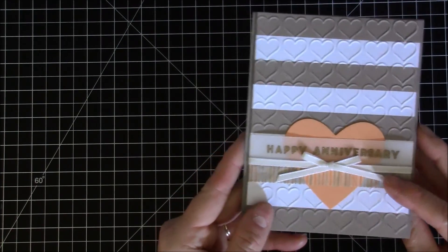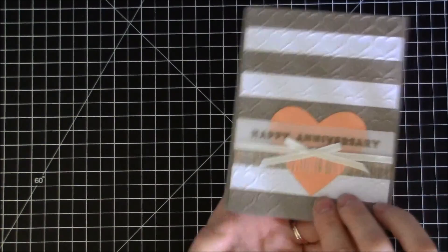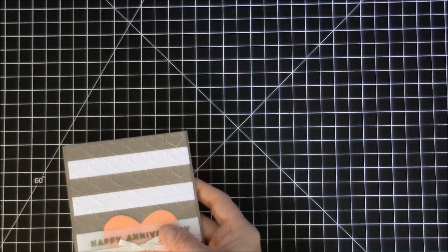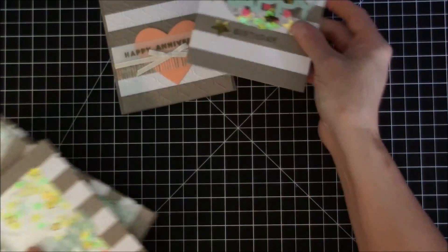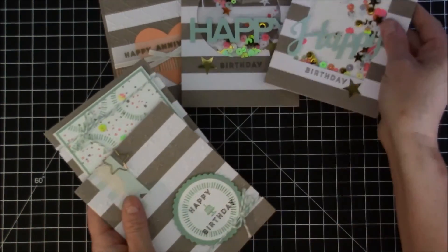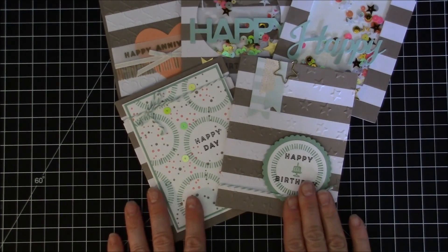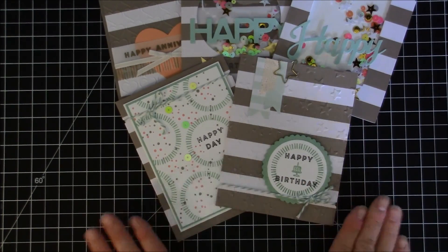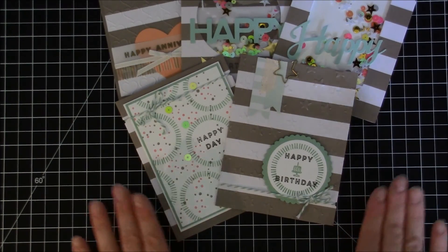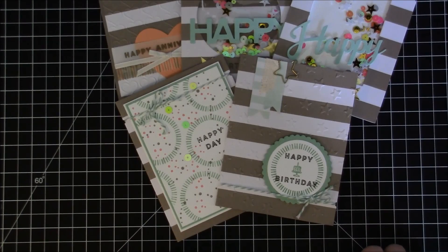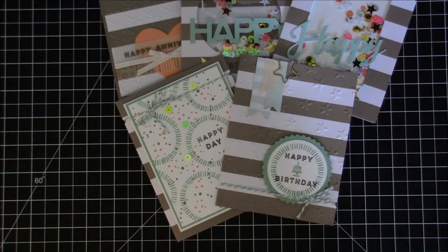So these are my five different cards that I made from the June 2016 paper pumpkin kit. Of course you don't have to do this when you get your kit, you can make them all the same. But I thought I would give you some ideas of some things you could make with items that you may have in your stash just to kind of add to your card stash for the month. So thank you so much for watching. And hey if you don't have a Stampin' Up! demonstrator yet in your life,